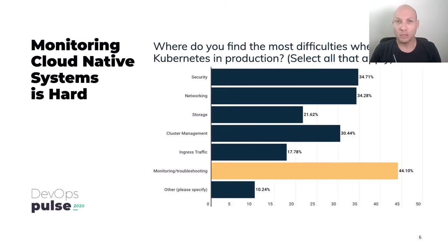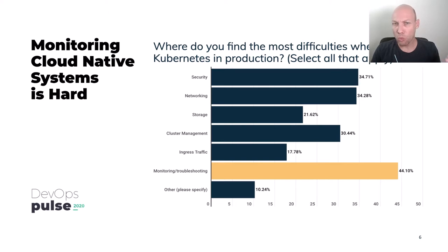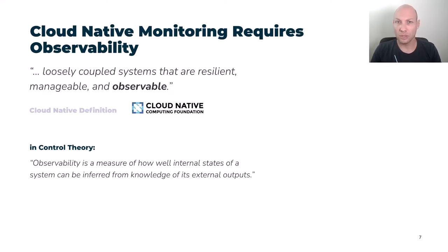When you ask people what difficulty they encounter running in production — for example, from the recent DevOps Pulse survey that we run at Logz.io — and we asked specifically about running Kubernetes in production, the number one issue that kept coming up was around monitoring and troubleshooting. So the problem is definitely there and it's hard.